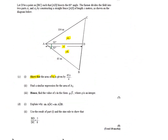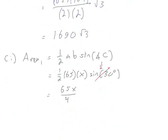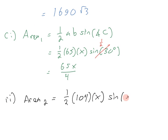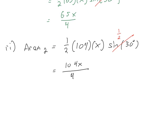For Part C part 2, we find a similar expression for area 2. Using the other 30 degree angle, side X, and side 104, area 2 equals one half times 104 times X times the sine of 30 degrees. Just like before, the sine of 30 degrees is one half, giving us 104X over 4. Since 104 divides by 4, we get 26X as the area of area 2.